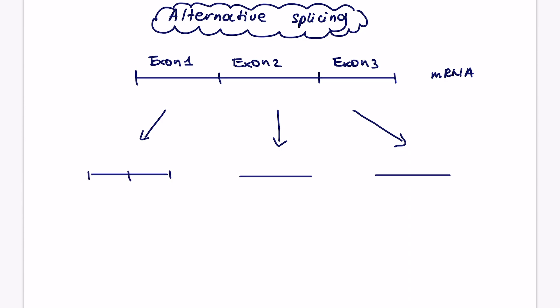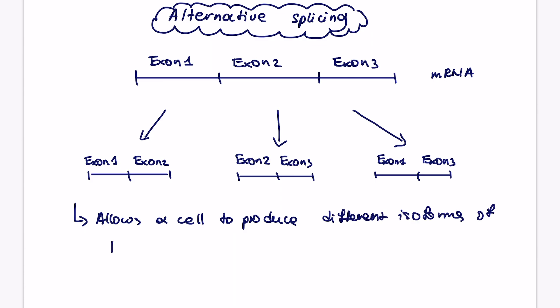So in only some cells and for some proteins, a cell might decide to actually choose specific exons. So in this case, it might go for exon 1 and 2 or exon 2 and 3 or exon 1 and 3. Remember that a cell will have many more exons. This is just a very brief example. So what's the purpose of that? Well, if a cell can choose which exons to keep, it will allow a cell to produce different isoforms of proteins.